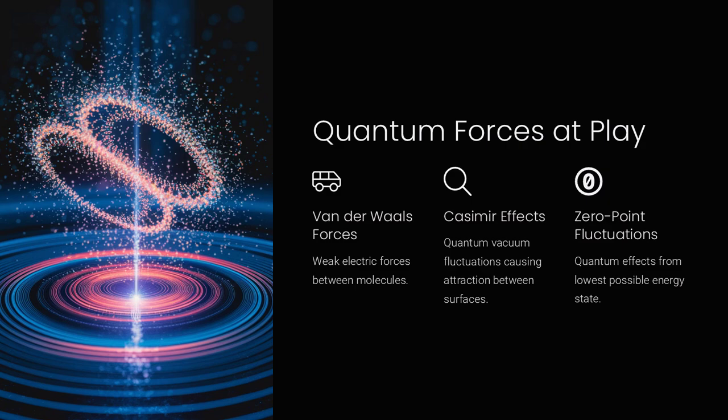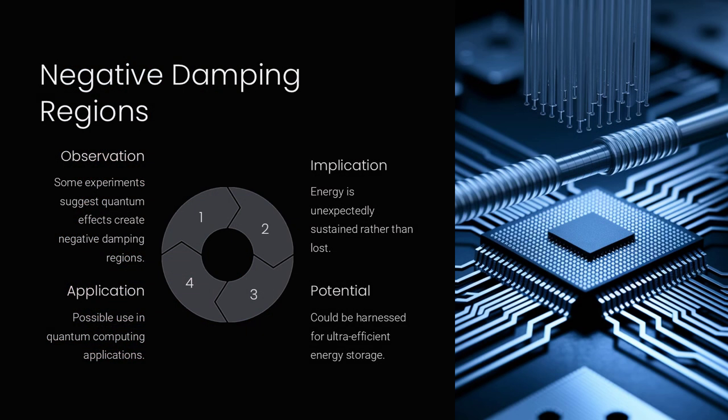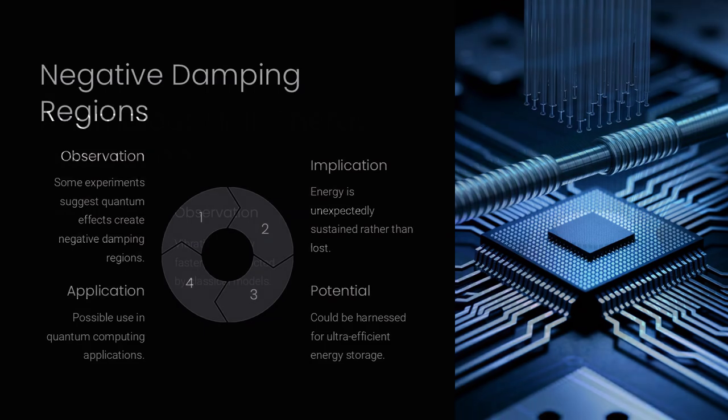Classically, oscillators lose energy through friction, air resistance, or internal material damping, causing their vibrations to gradually fade.